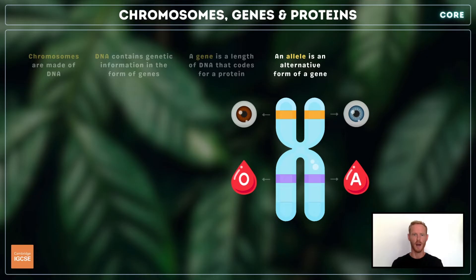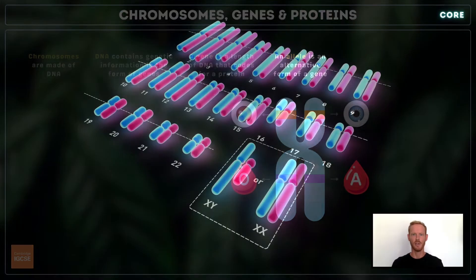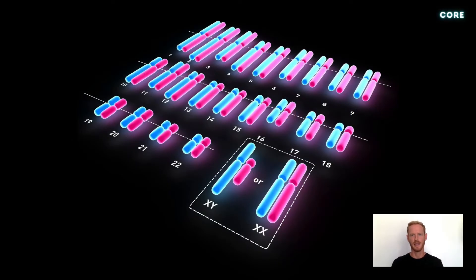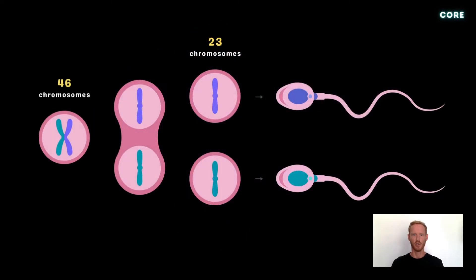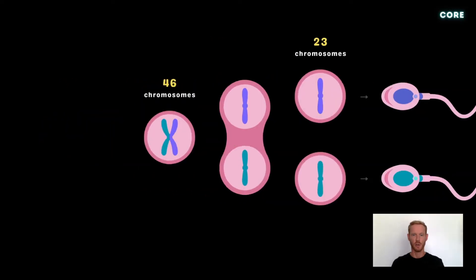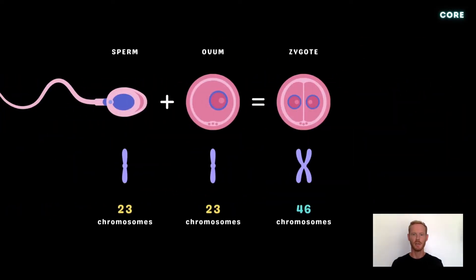One allele codes for brown eyes and one for blue. A human body cell nucleus contains 23 pairs, or 46 individual chromosomes. When gametes are produced, the pairs of chromosomes divide, meaning the number of chromosomes in the nucleus of each sex cell is halved. During fertilisation, two gametes fuse to form a zygote, which contains two complete sets of chromosomes — one from the mother and one from the father.